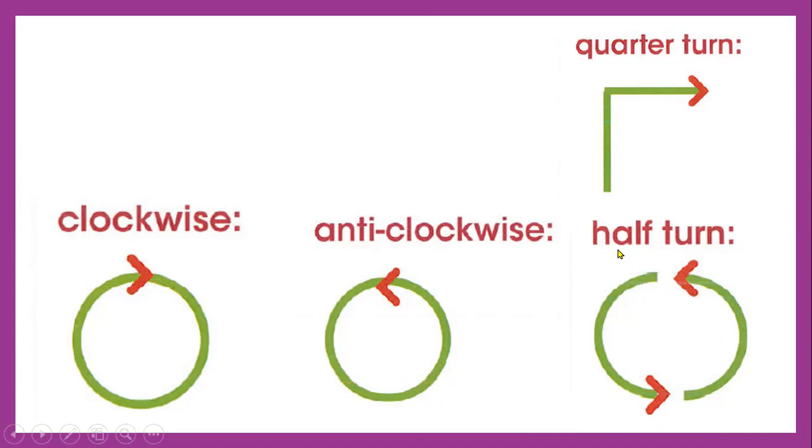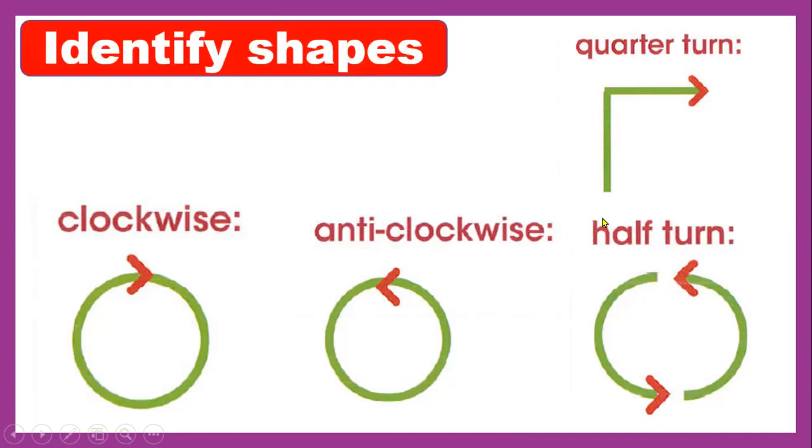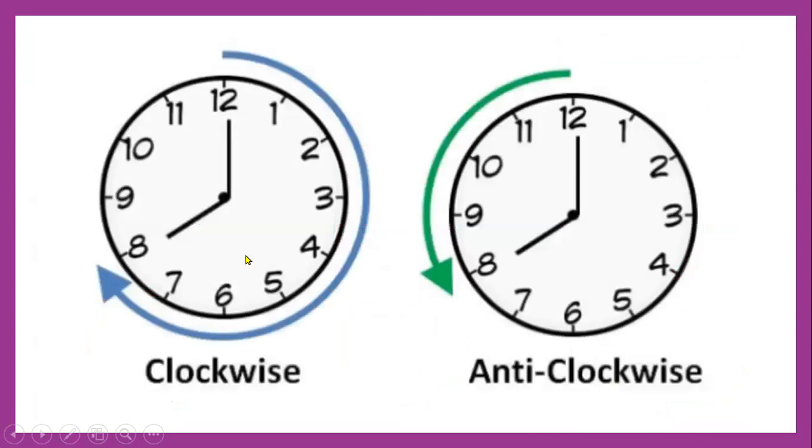We discussed half turn and a quarter turn. Now look at these examples for the clock. We have two clocks. In this clock, the hands are moving clockwise, and this clock's hands are moving anti-clockwise.